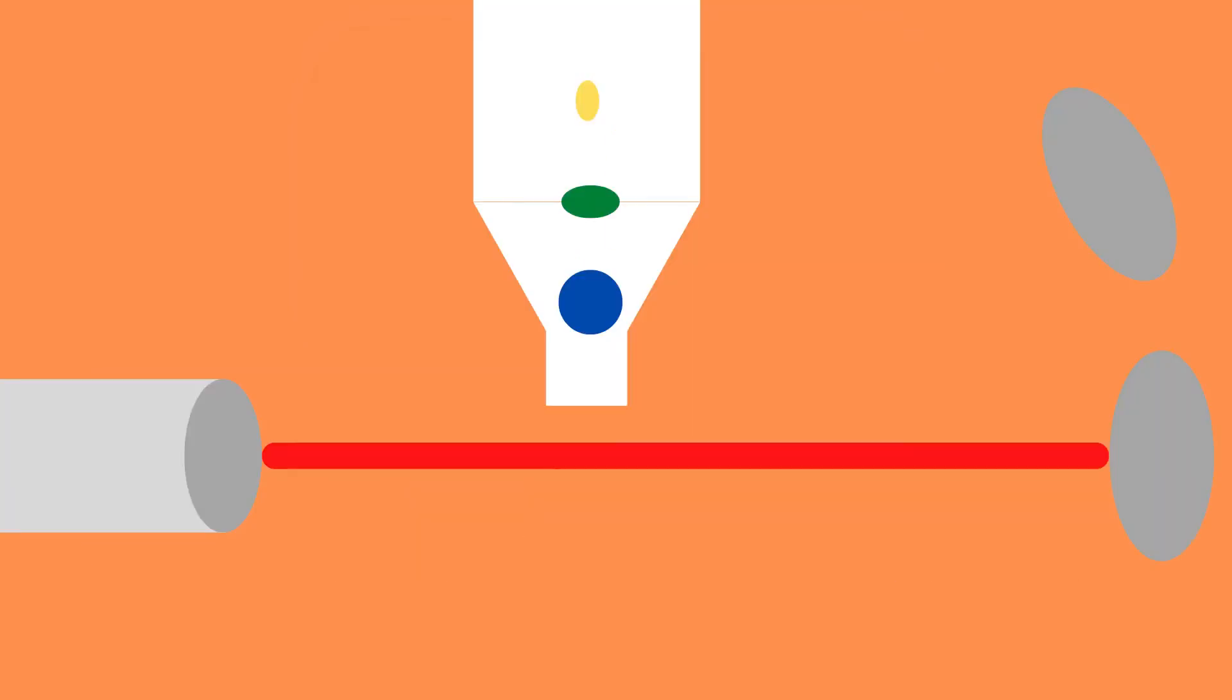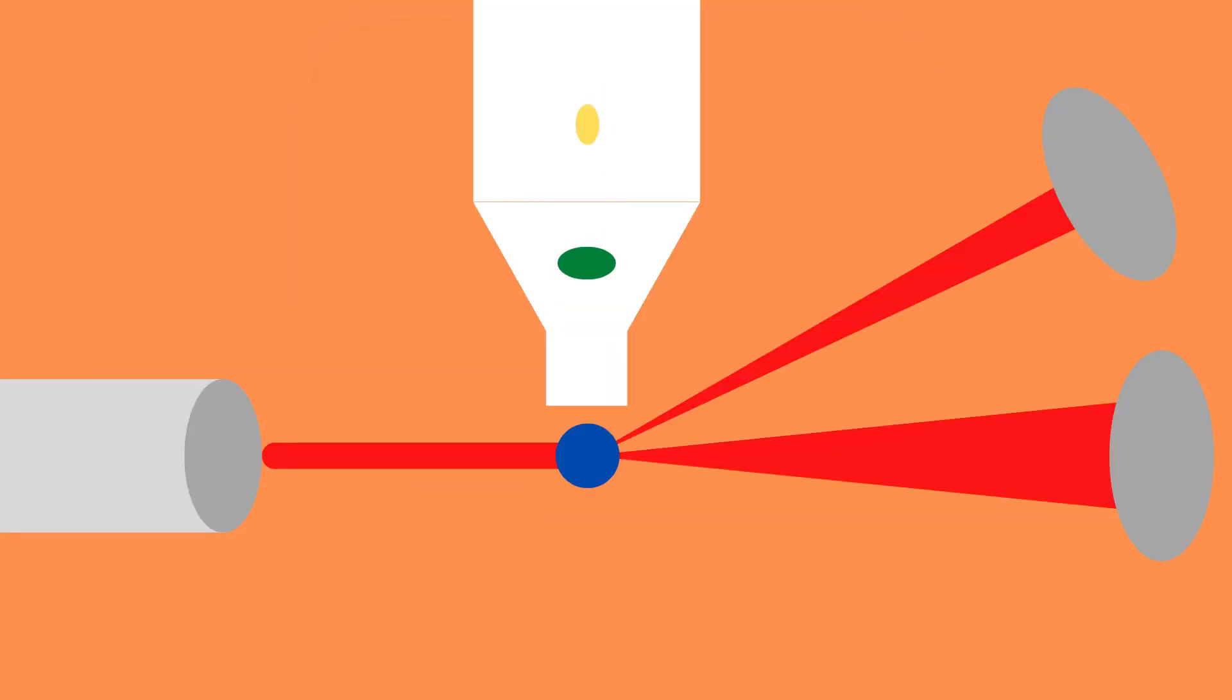Flow cytometry uses light scattering caused by cells in a sample which are passed through a laser beam. This light scatters in a forward direction as well as the side direction and is called forward scatter and side scatter respectively.